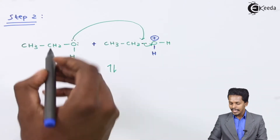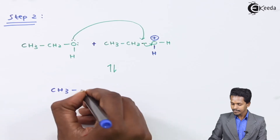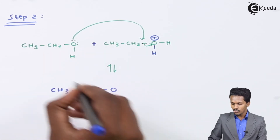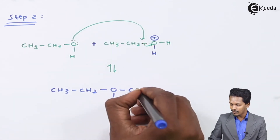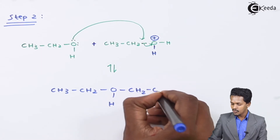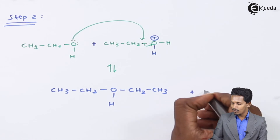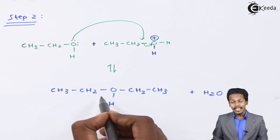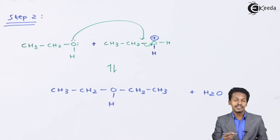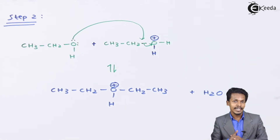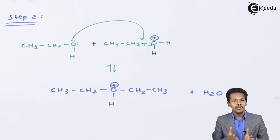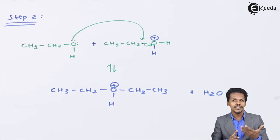This is a reversible and slow process. The product formed is CH3CH2-O(H)-CH2CH3⁺, with water being released as a byproduct. The oxygen again acquires a positive charge due to three valences. The name of this step is: attack of the second alcohol on the protonated alcohol. This proceeds as an SN2 process.